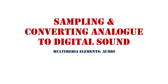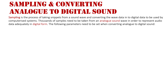Multimedia elements: audio sampling and converting analog to digital sound. Sampling is the process of taking snippets from a sound wave and converting the wave data into digital data to be used by computerized systems. Thousands of samples need to be taken from an analog sound wave in order to represent the audio data adequately in digital form.